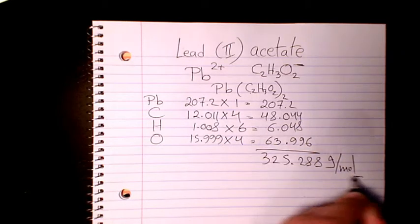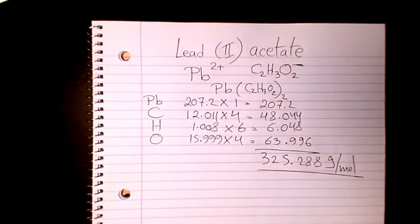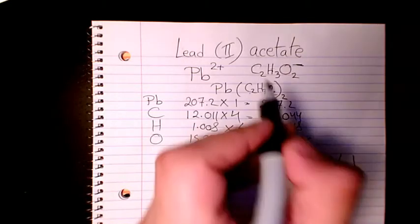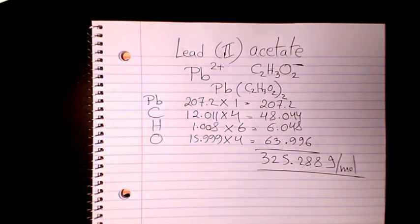That makes it as 325.288 grams per mole. So that's the molar mass or molecular weight of lead (II) acetate. I hope you enjoyed this video. Please leave me a comment if you have any question and I'll get back to you as soon as possible.